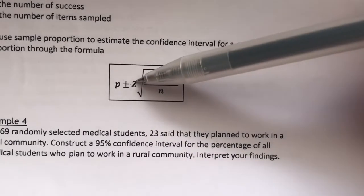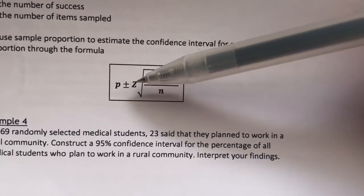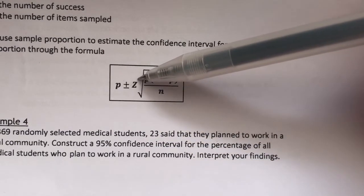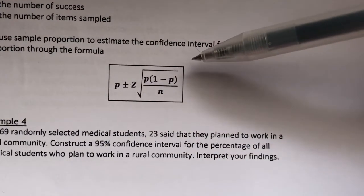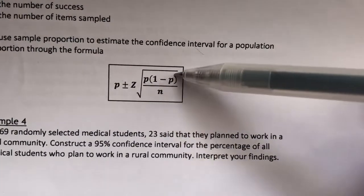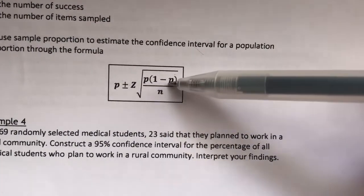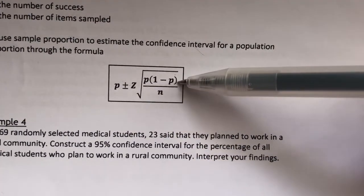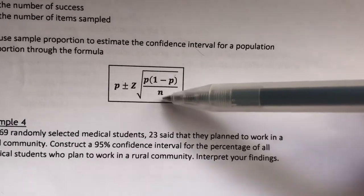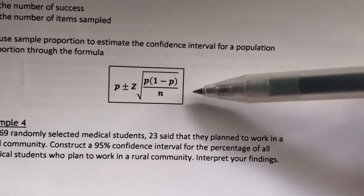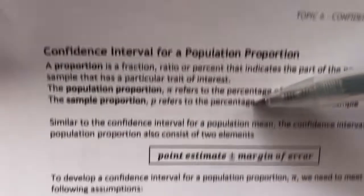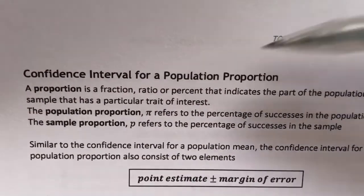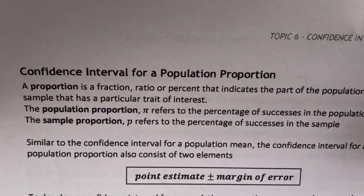Z is still our level of confidence. However, our standard error is p times 1 minus p over n, square root of it. So this will be our formula to find the confidence interval for population proportion.